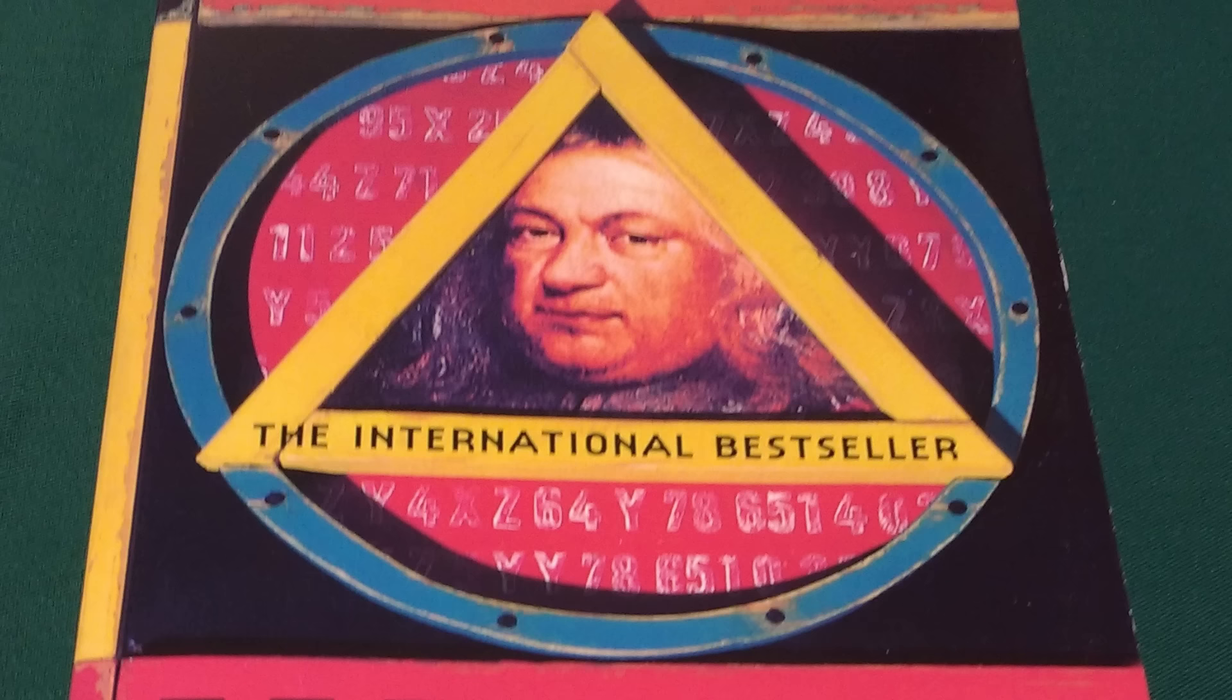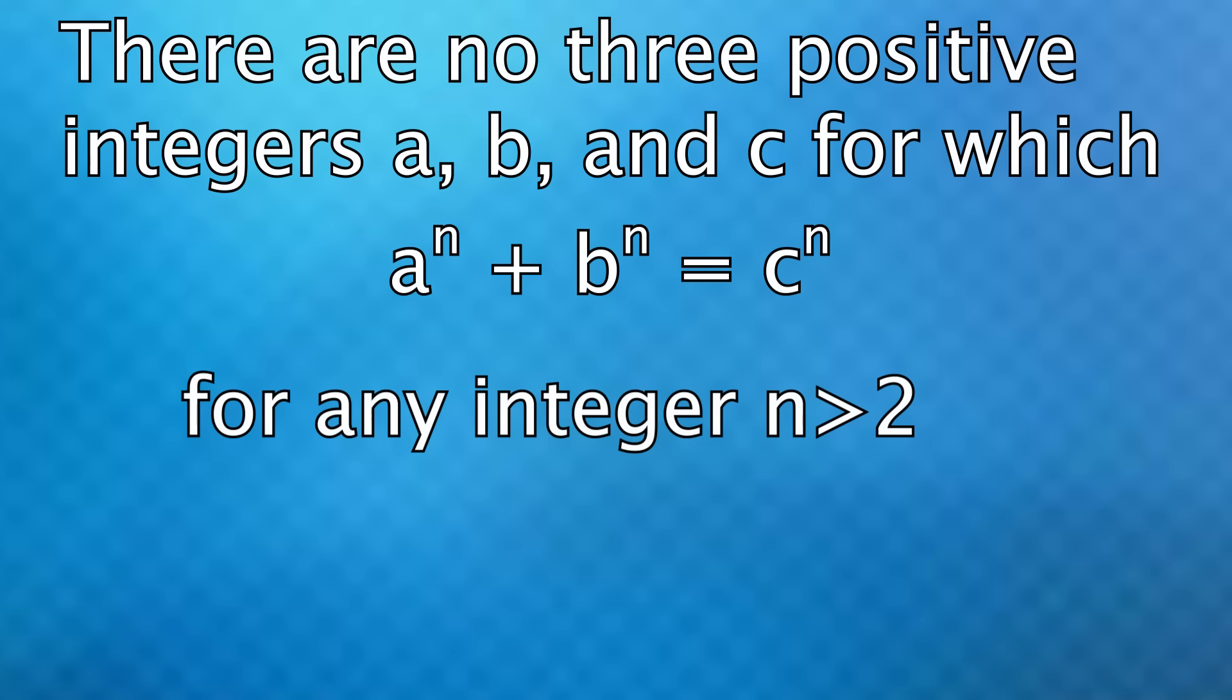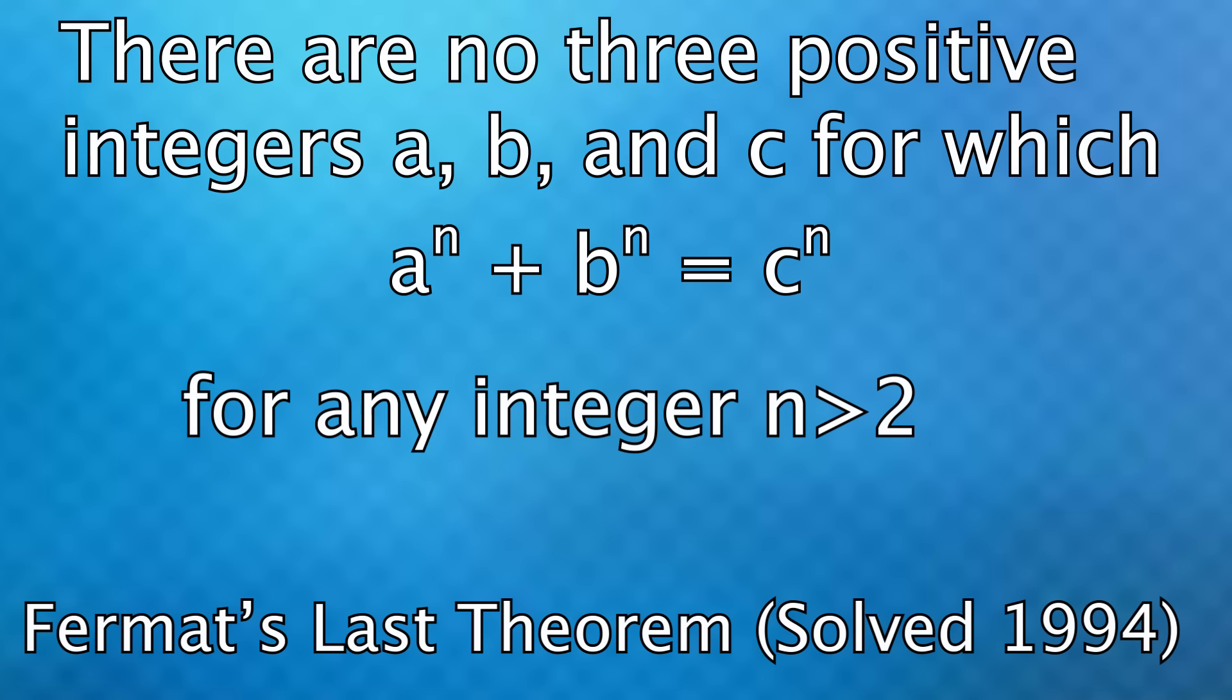Moving on, Fermat's last theorem, which is easy to understand on the surface, was unsolved for 300 years. This theorem says that there are no three integers, A, B, and C, such that this is true, where n is any integer greater than 2. No one could prove whether this was true until just a few decades ago in 1994 where Andrew Wiles finally proved the theorem and found that in fact there are no integers that make this true.